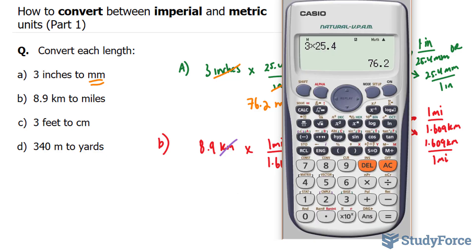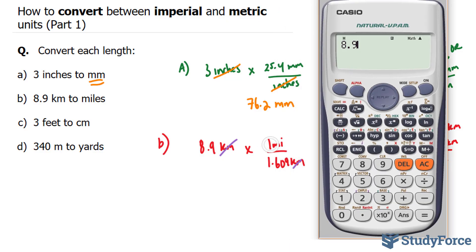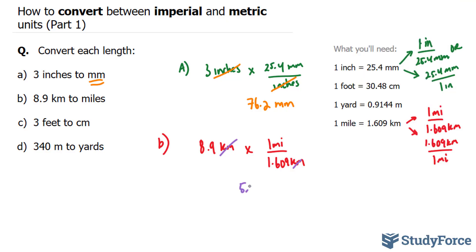Multiplying this out, we end up with 8.9 times 1, which we won't do because we know it's the same thing, divided by 1.609. That gives us an answer of 5.53. 5.53 miles is the same thing as 8.9 kilometers. So watch your speed limit.